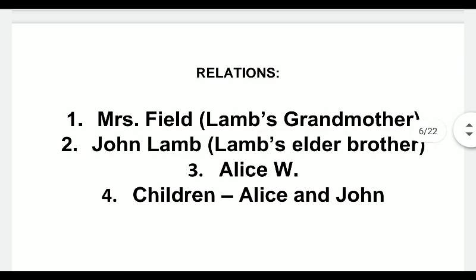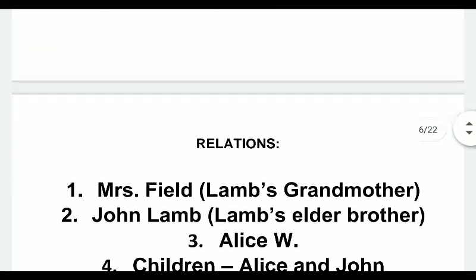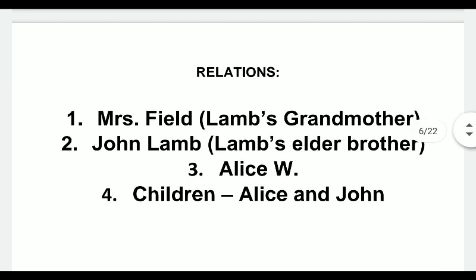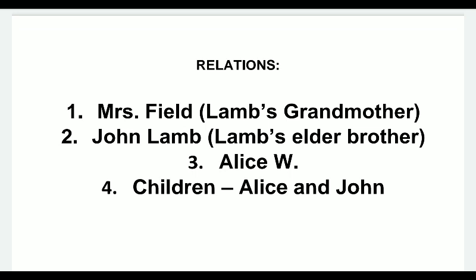We have identified four relationships that Lamb tells us about in this essay. The first is Mrs. Field, who is Lamb's grandmother. She was the caretaker of a huge mansion in Norfolk and invited Lamb to spend his holidays there. She was loved and respected by all and was a very pious lady. Then her cancer and her death. This is the first relationship Lamb shares in the essay.